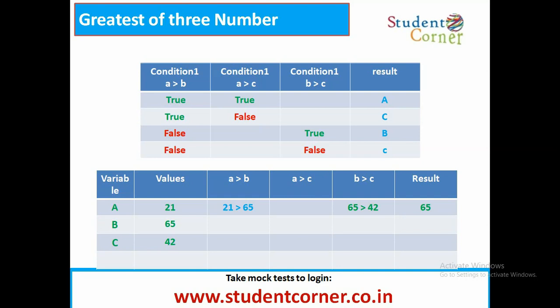Taking a small example: variables are a, b, c with values 21, 65, and 42. The first condition is 21 greater than 65 - that is false. So we move to the b greater than c condition: 65 greater than 42? Yes. So obviously 65 is the greatest - b value is the greatest.